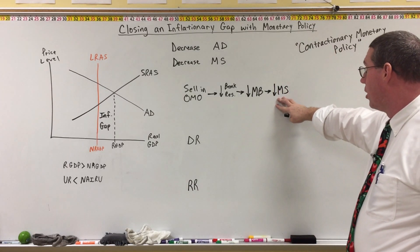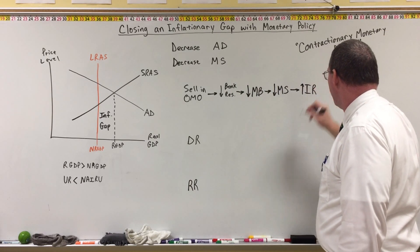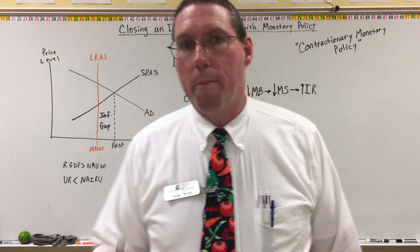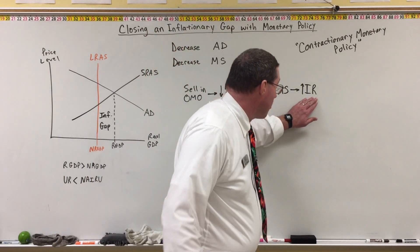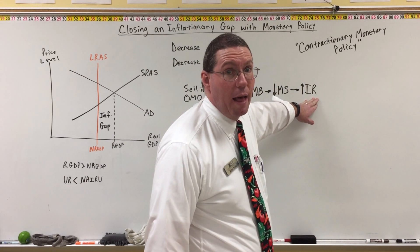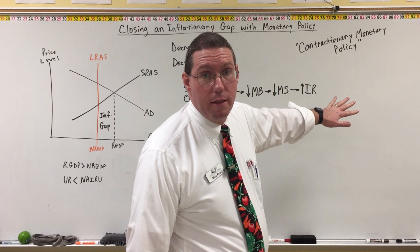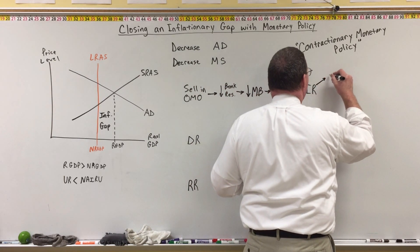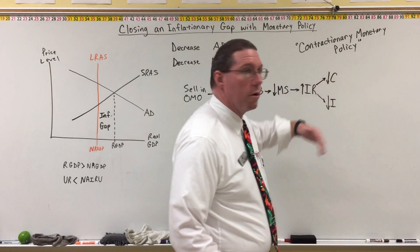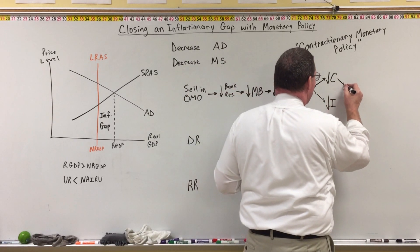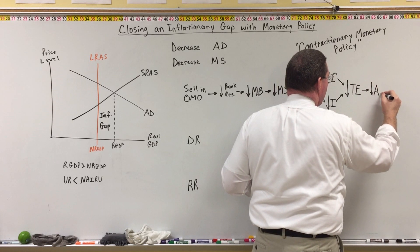In the money market, when the vertical money supply curve shifts to the left, that results in an increase in interest rates. Because interest rates have gone up, it costs more money for businesses and households to make purchases. Businesses will say interest rates are high — they don't want to invest in a project right now. Households will spend less money because they don't want to get bogged down in high interest rates. So we will have a decrease in consumption and a decrease in investment. Lower consumption and lower investment — the two biggest pieces of total expenditure — means total expenditure decreases, which is associated with a decrease in aggregate demand.